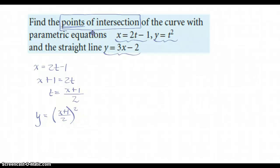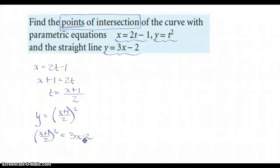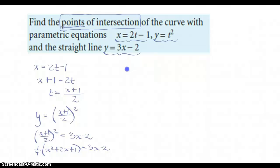Here's a straight line, and we want to know the points of intersection. Two things intersect when they equal each other, so I'm going to set this equation equal to the other equation — because if y equals this and y equals that, those two things need to equal each other. I'll factor one-fourth out front, leaving x² + 2x + 1 = 3x − 2. Multiplying both sides by 4 gives x² + 2x + 1 = 12x − 8.